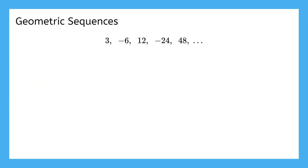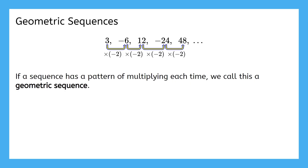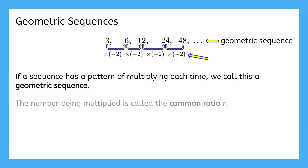Next, let's talk about the geometric sequence. What's this pattern? Did you find that we need to multiply by negative 2 each time to get the next number? If a sequence has this pattern of multiplying each time, we call it a geometric sequence. If something appears to be division, we can think of it as multiplying by a fraction instead — we'll see this in the next example. Since our sequence is multiplying, it is a geometric sequence. Just like with arithmetic sequences, we have a special term for this number, negative 2. Instead of d for difference, we use r for ratio. The number being multiplied is called the common ratio. In this problem, the common ratio r is equal to negative 2.